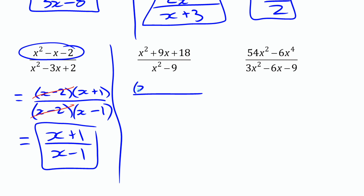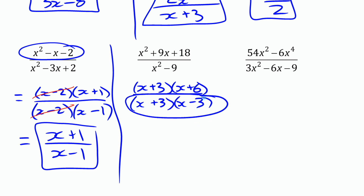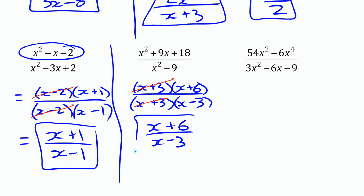The next one: write it in factored form. The numerator has no common factor and factors as two binomials: (x plus 3)(x plus 6). The denominator is a difference of squares — x² minus 9 factors as (x plus 3)(x minus 3), since a middle term of zero requires plus 3 and minus 3. We cancel the common (x plus 3) factors, leaving (x plus 6) over (x minus 3). Nothing else can be reduced, so that's the equivalent simplified fraction.